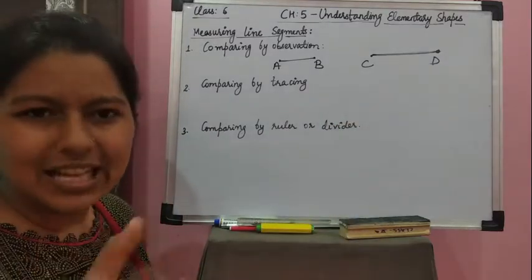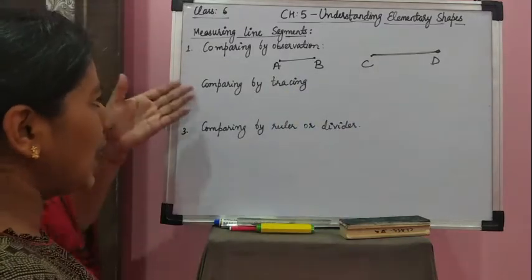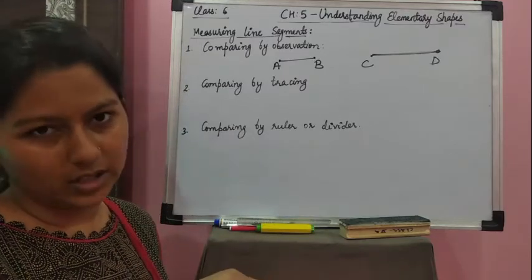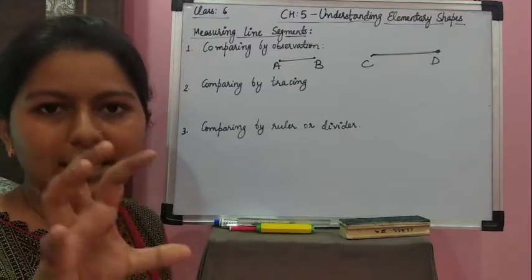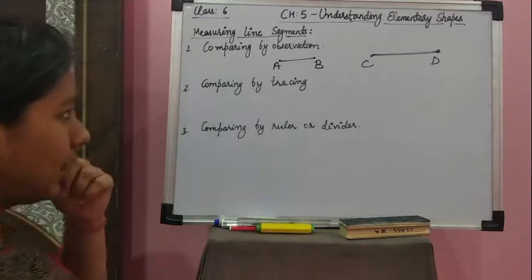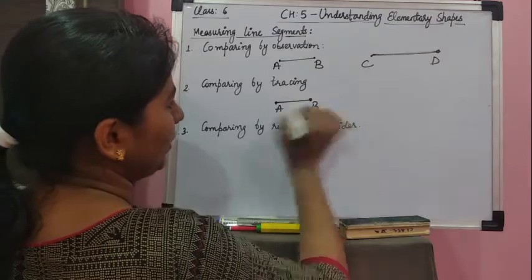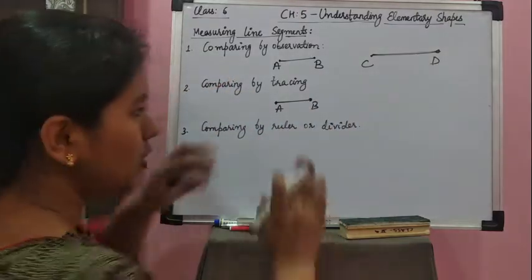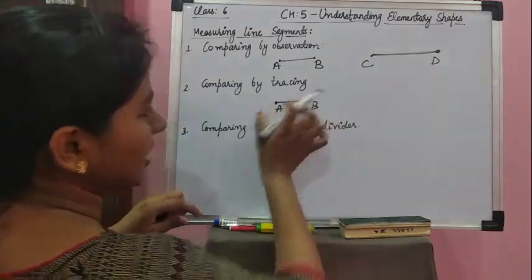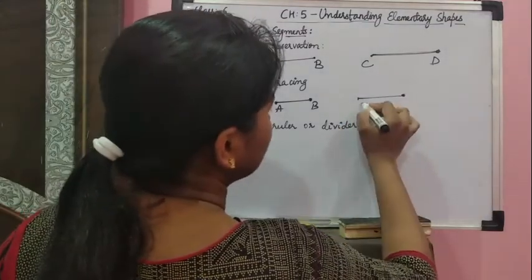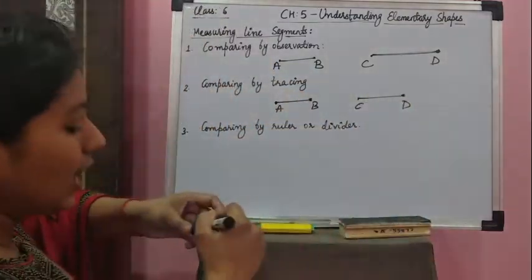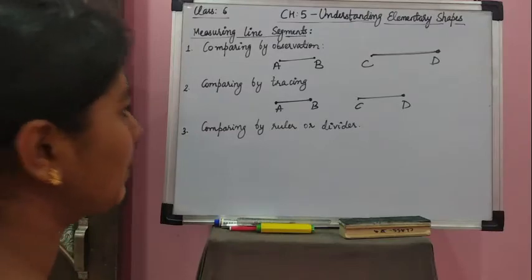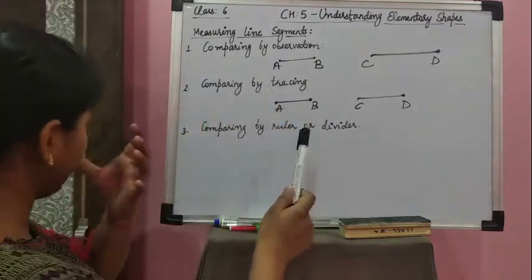Now what if there is a very slight difference between the two line segments? Then we can use another way — comparing by tracing. You all know about trace paper; we use it for sketching or copying any figure. So suppose again I have line segment AB. First I put my trace paper over it and sketch line segment AB on the trace paper. Then I put that trace paper on CD, and we can see whether CD is less than or more than the line segment on the trace paper. By tracing we can also compare the two line segments.